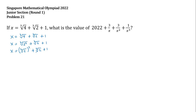Now what I'll do next is let the cube root of 2 be equal to a. This step is not necessary, but I'll do it just to help you determine the next step and to make the solution clear. So let a equal the cube root of 2. If we do that, the value of x becomes x equals a squared plus a plus 1.